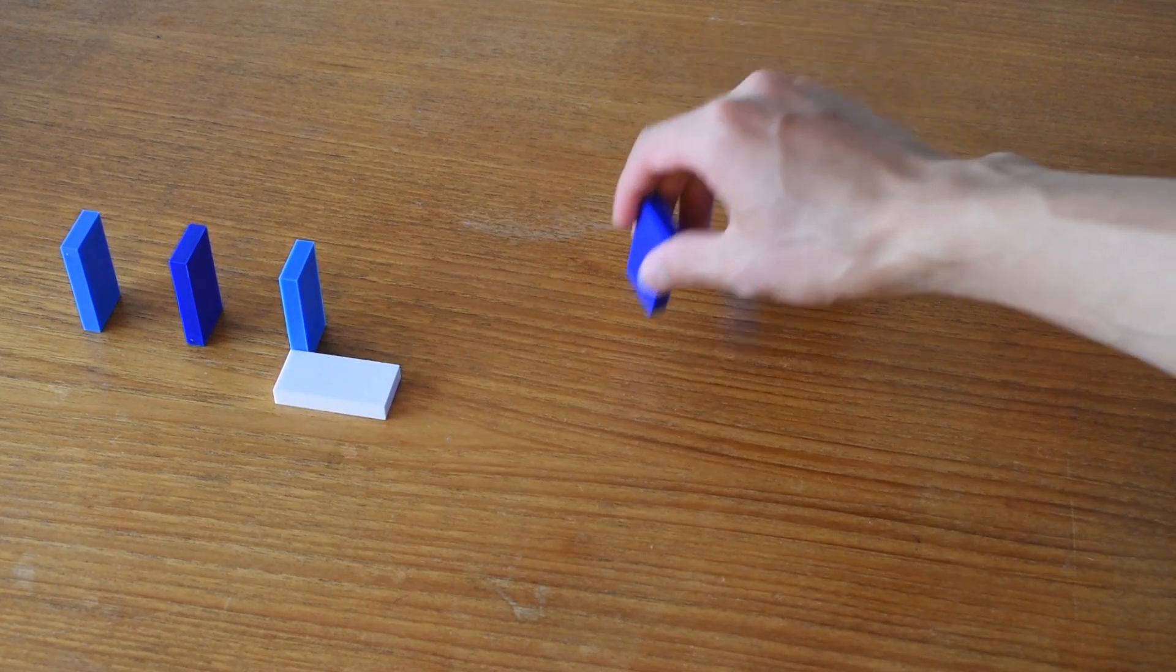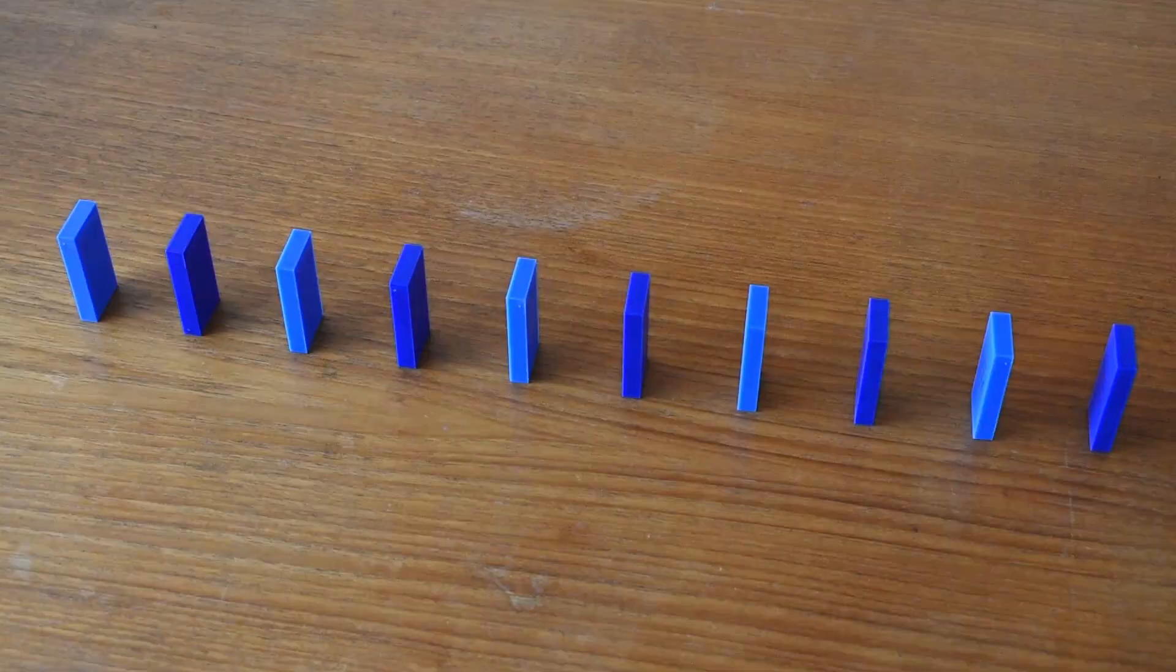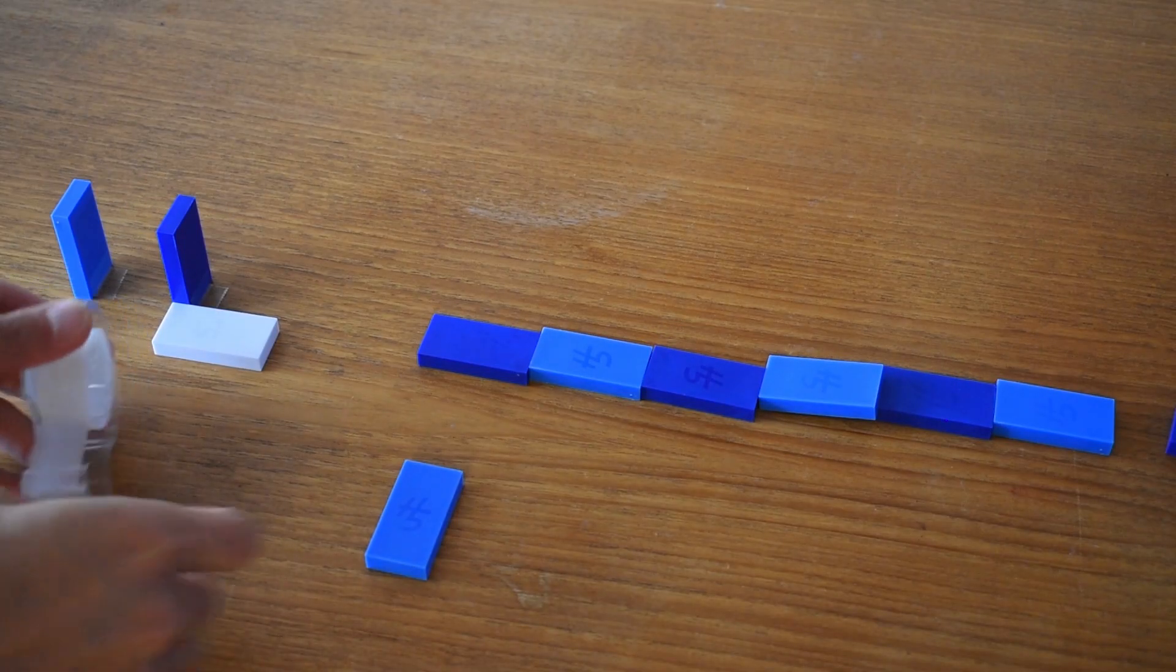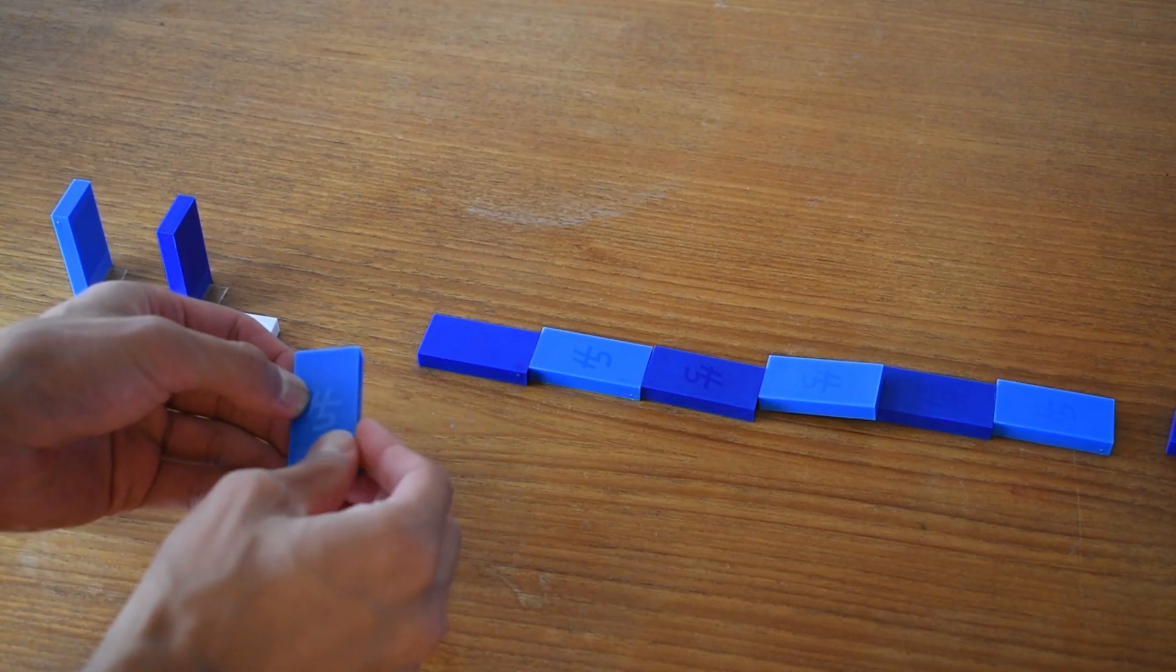To get the double domino effect, the dominoes are spaced at the same distance as their height. Now regular dominoes shift when they fall, so the only way to really maintain their spacing is to hinge them. And scotch tape is the most common way to do this.